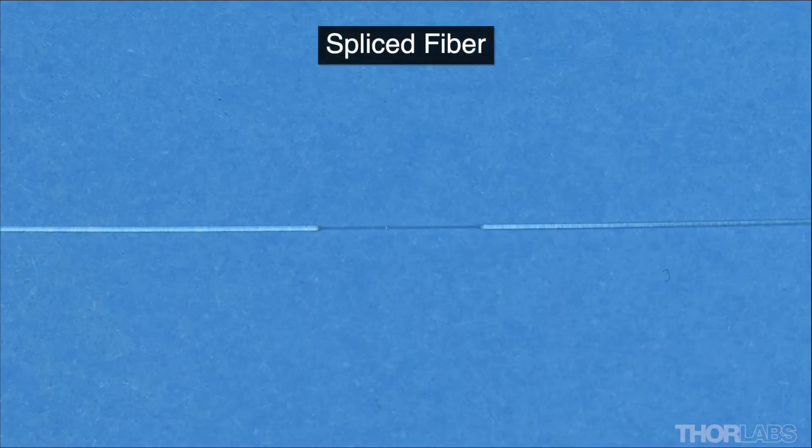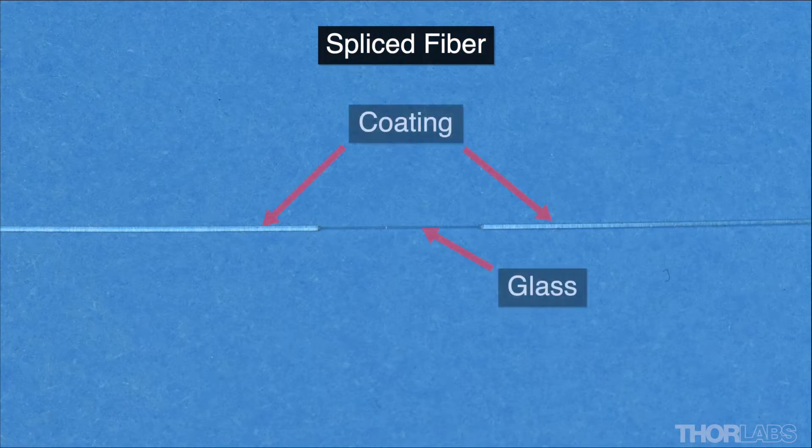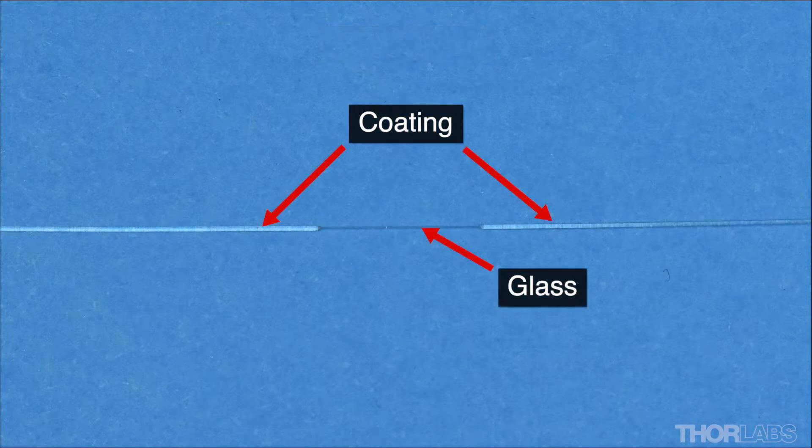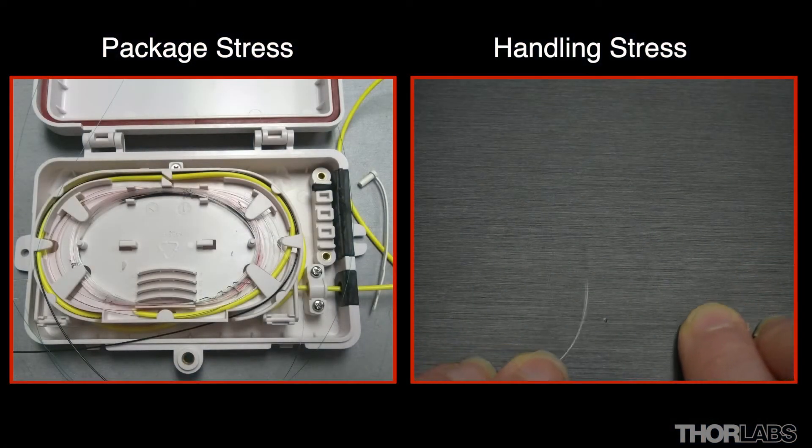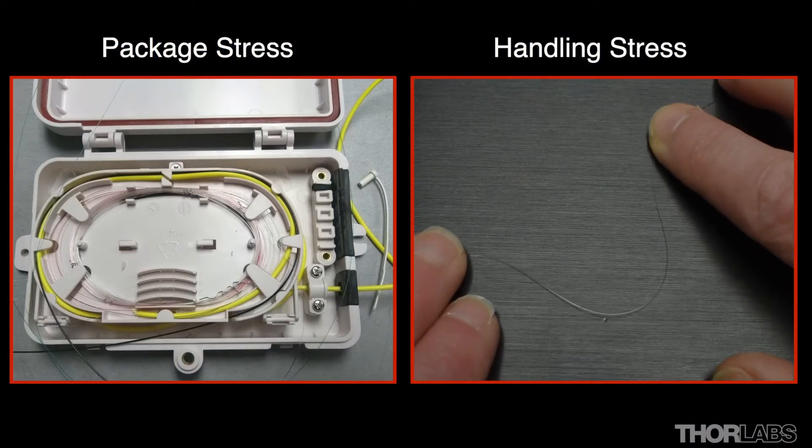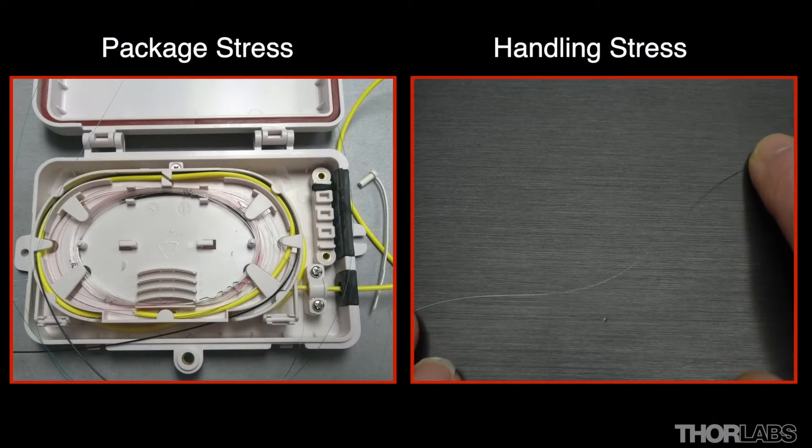The mechanical integrity of a splice is largely controlled by the quality of the glass surface around the splice joint. Micro cracks or abrasions in and on the glass in this area can cause localised stress points. Subsequent stretching, bending or twisting of the fibre can cause cracks to propagate through the brittle glass structure and result in fracture.